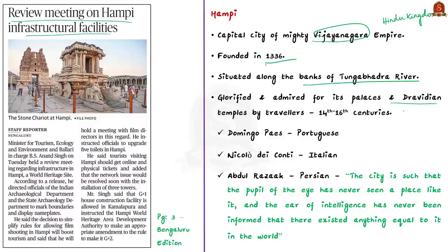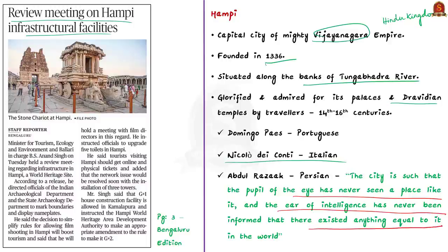Hampi was visited by many travelers between the 14th and 16th centuries, including Portuguese traveler Domingo Paes, Italian traveler Niccolo de Conti, and Persian ambassador Abdul Razzaq. Abdul Razzaq described the city: 'The city is such that the pupil of the eye has never seen a place like it, and the ear of intelligence has never been informed that there existed anything equal to it in the world.' By these words alone, you can infer how majestic and beautiful the city was.